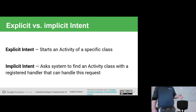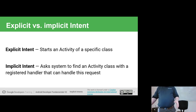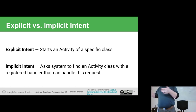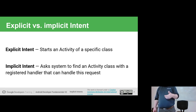An explicit intent, as we've already discussed, is saying: I want you to load this class. I have to give you the actual class reference to open up an instance of this activity. With an implicit intent, the difference is I'm just not telling it which class to open — I'm letting the operating system decide. The user might choose to use your own app if it can do that functionality, or they may choose to use another app.